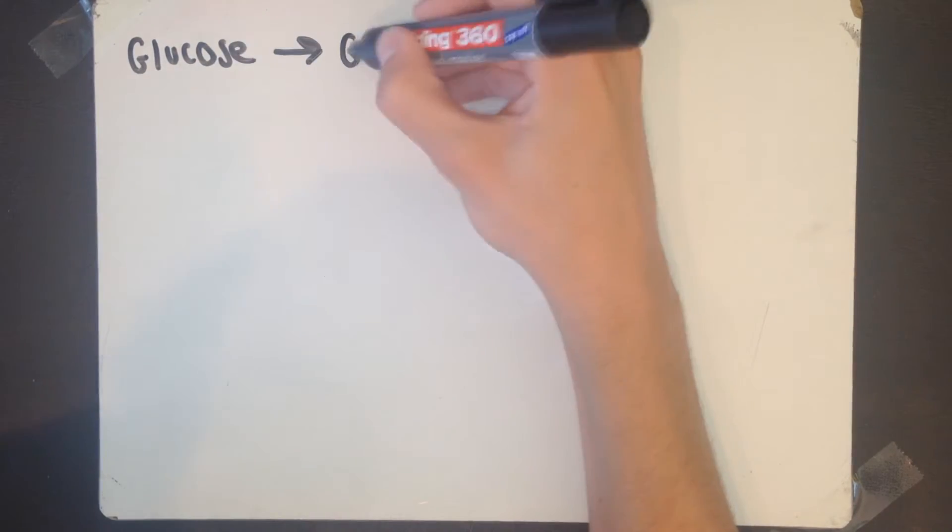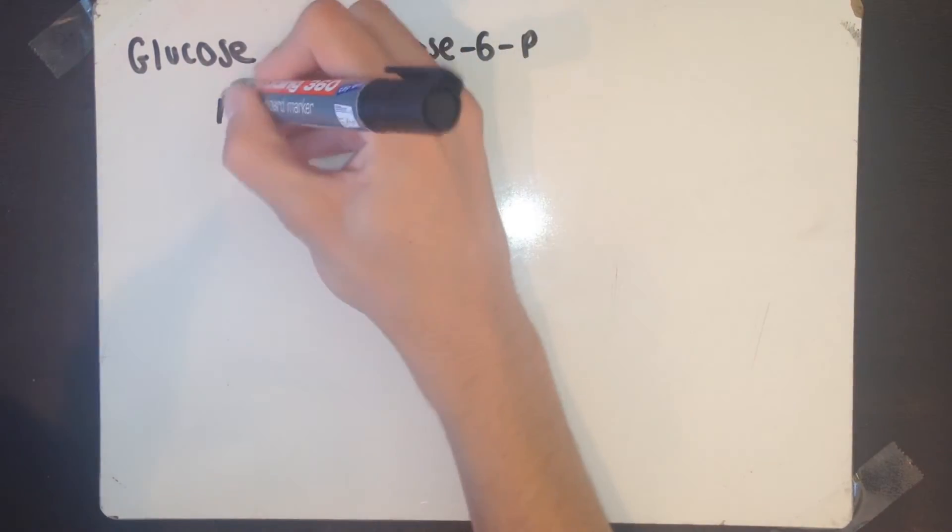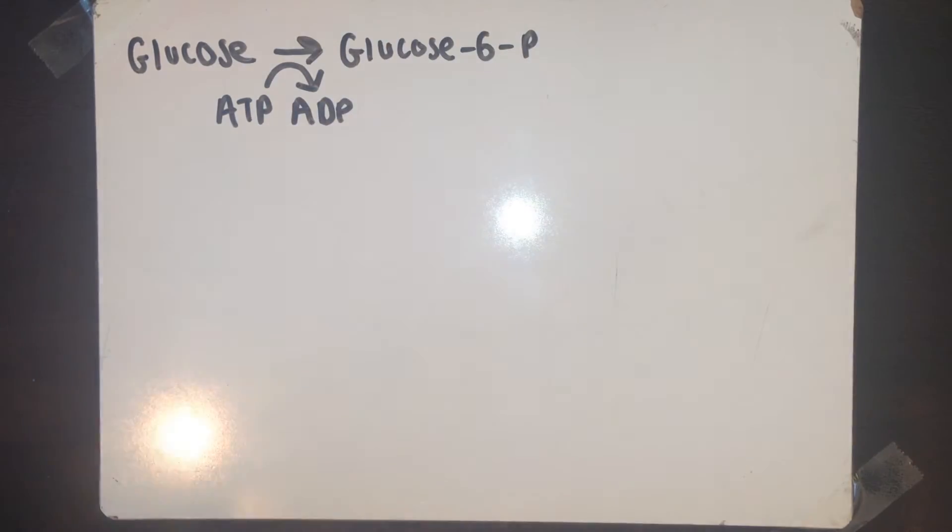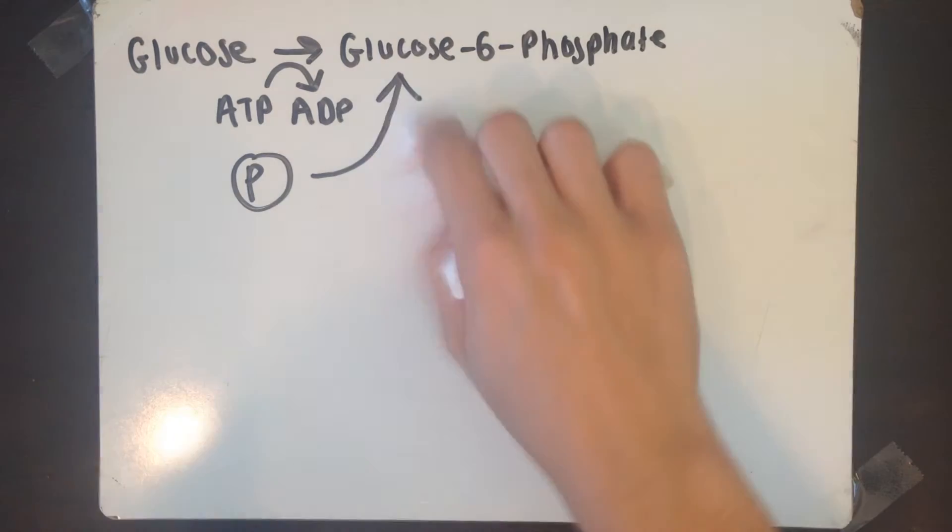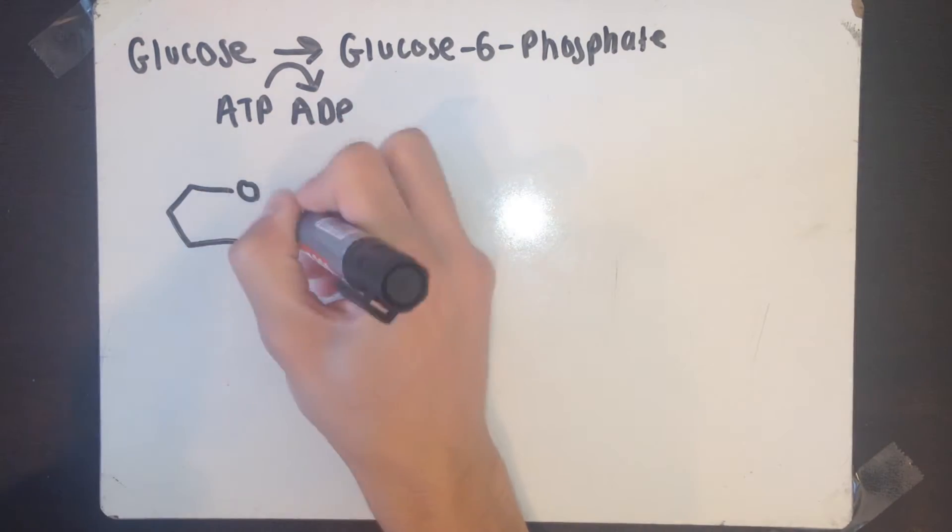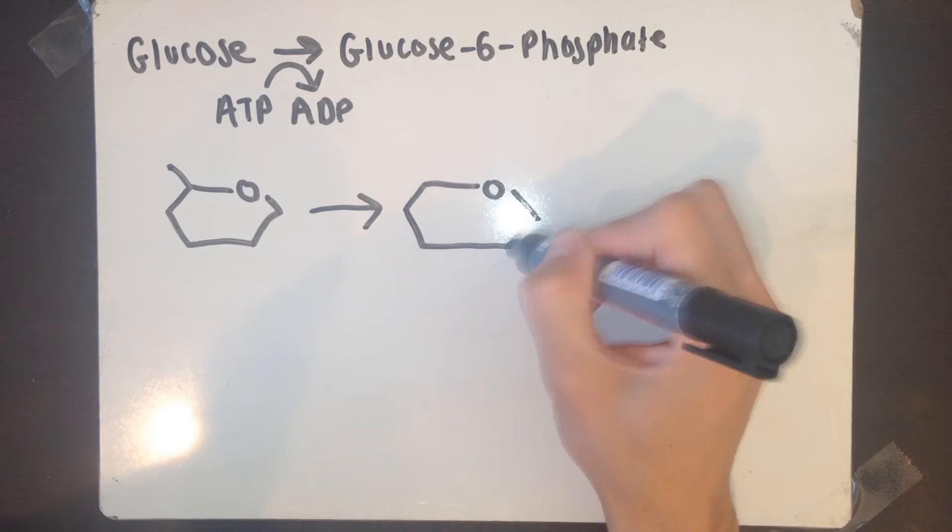So step one, glucose is turned into glucose 6-phosphate, or glucose 6-P for short. What happens is ATP is hydrolyzed to ADP, and as I said earlier you get a phosphate group which is attached to the number 6 carbon atom of glucose.